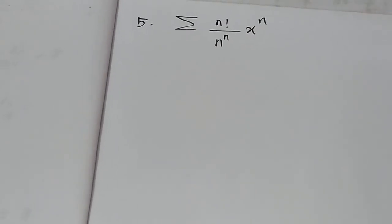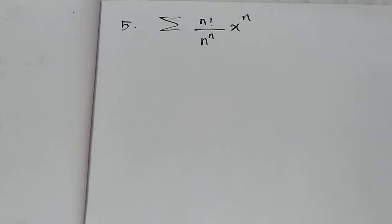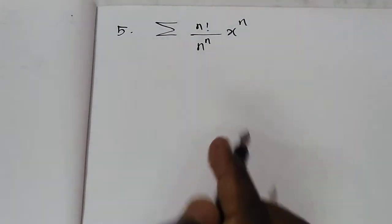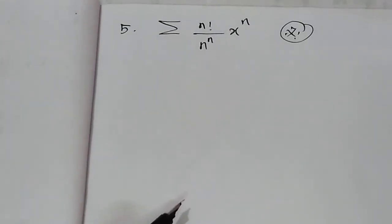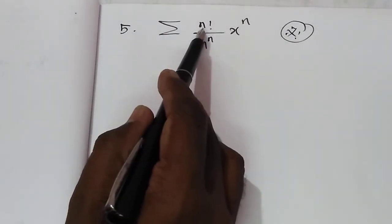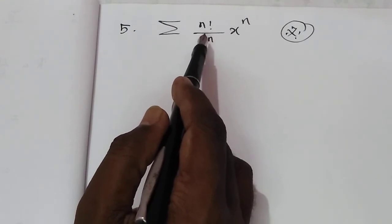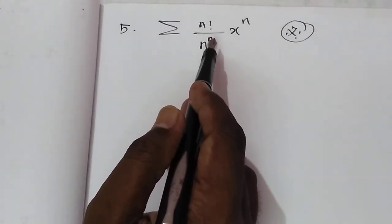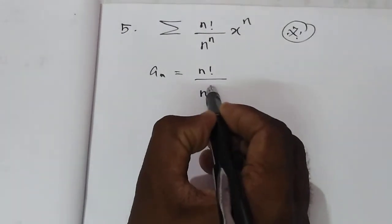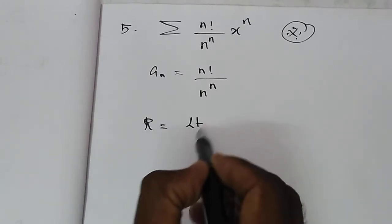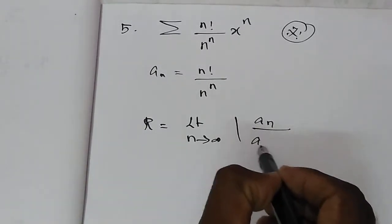This is a very important problem. Questions about this are asked in TNPSC, PGTRB, Polytechnic, Engineering Mathematics, and Assistant Professor exams. Here, a_N is equal to N factorial by N power N. So the radius of convergence equals limit N tends to infinity of a_N by a_N plus 1.